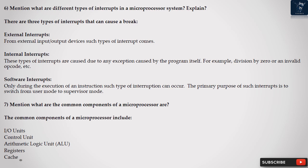Question 6: Mention what are different types of interrupts in a microprocessor system? There are three types of interrupts that can cause a break. External Interrupts: From external input/output devices such types of interrupt comes.